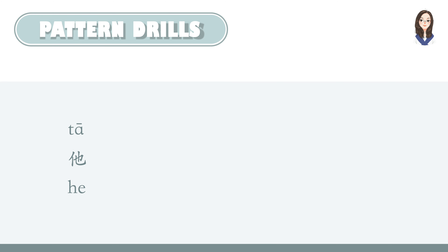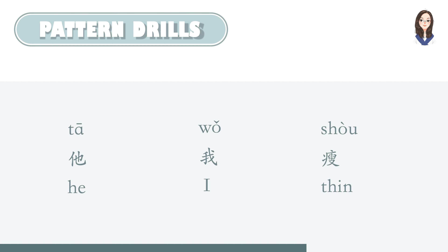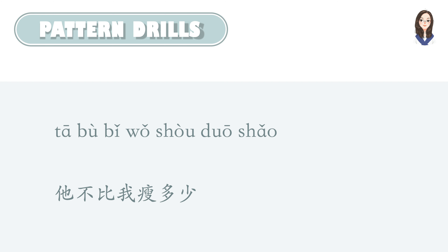Now let's try to use this pattern to make some sentences. 他 我 瘦 — 他不比我瘦多少。